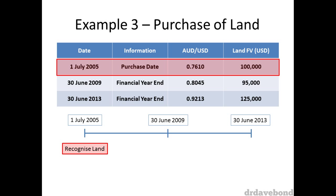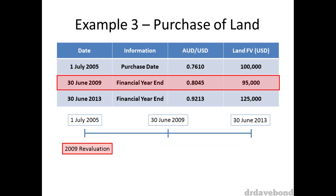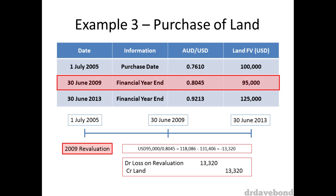You should now be pretty comfortable with accounting for the initial recognition entry. Because it's going back a number of years, the Aussie dollar is much weaker against the US than it is now. When the revaluation occurs on the 30 June 2009 — assuming the revaluation occurs on the same date as the financial year end — the US dollar land value has declined and the Aussie dollar has strengthened, leaving the fair value of the land at $118,086. The difference of $13,320 is a revaluation decrement and is thus taken through profit or loss as a loss.